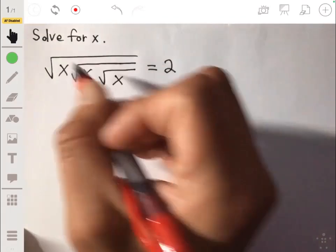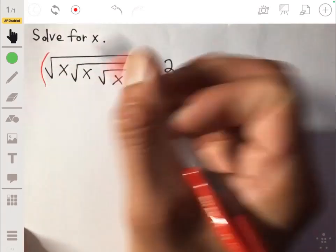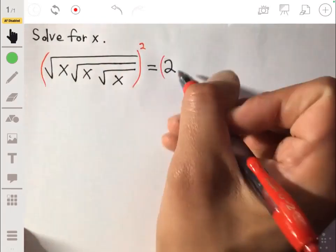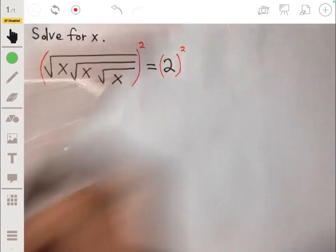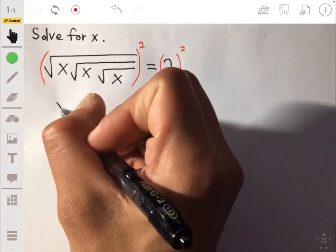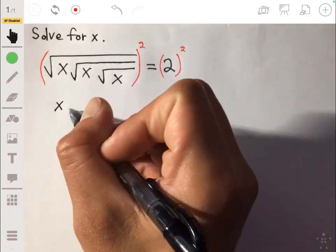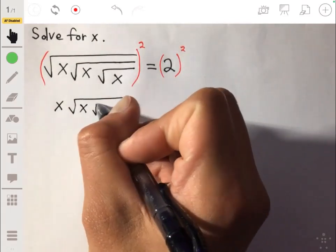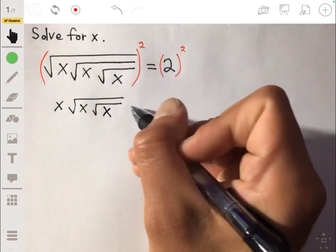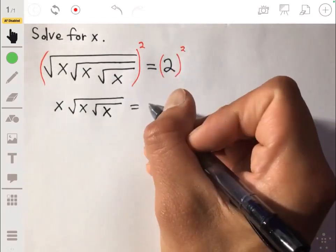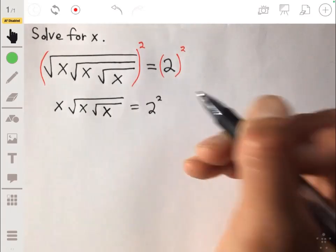Okay, to solve this equation for x, we're going to start off by squaring each side because that's going to undo the outermost square root. Then that x underneath there just becomes an x without a root, so it's x times the square root of x within the square root of x, which is equal to 2 squared or equal to 4. Let's just leave it as 2 squared so we don't have to worry about getting big numbers.